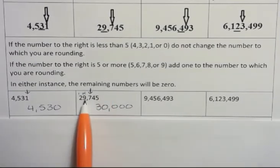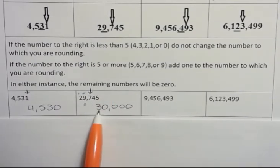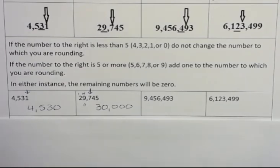So even though we were trying to round here, it looks like we rounded to the 10,000s, but we did not. We rounded to the thousands.